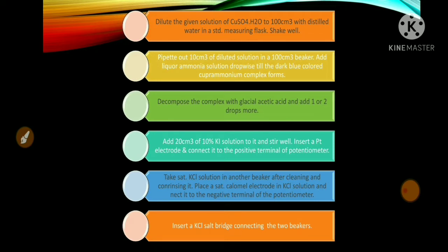Insert a KCl salt bridge connecting the two beakers. Then add 0.5 cm³ of sodium thiosulphate solution from the burette into the beaker containing copper sulphate solution along with liquor ammonia, acetic acid, and 10% KI solution. Measure the EMF reading from the potentiometer.